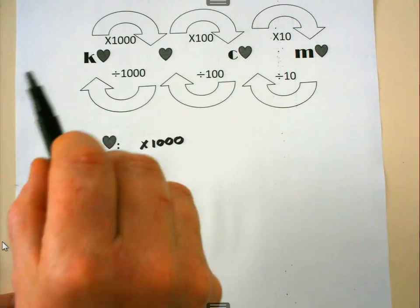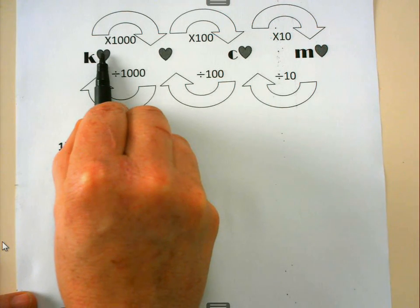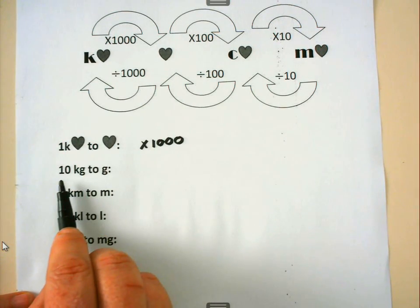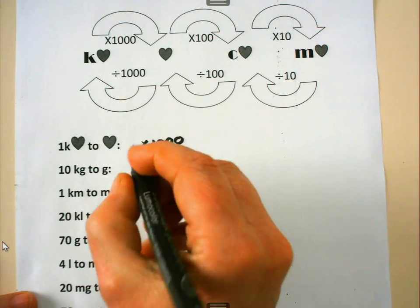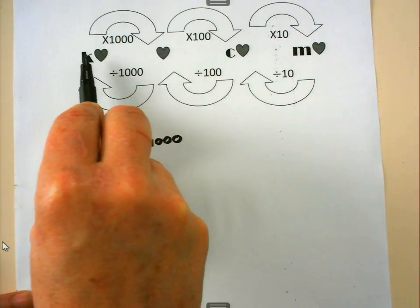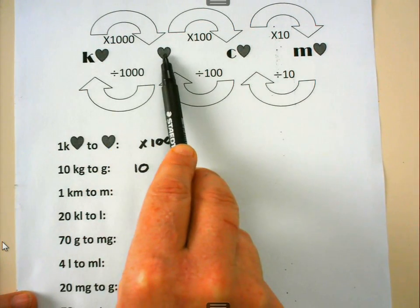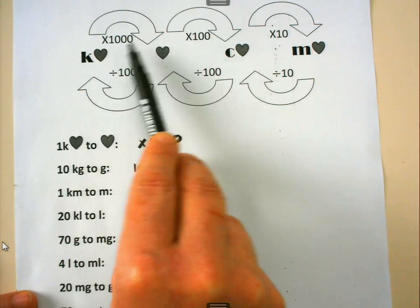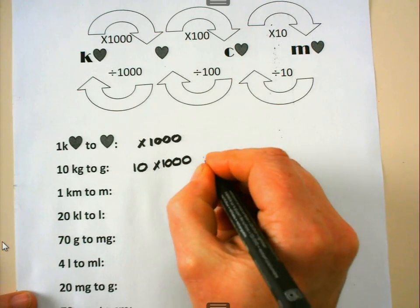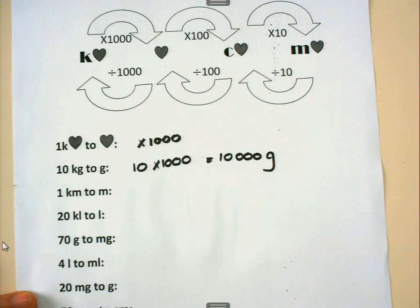Now let's go for real. In place of the heart, I can put a gram, a meter, or a liter depending on what I am measuring. First, converting 10 kilogram to gram: I move from kilogram to gram, multiplying by 1000, giving 10,000 gram. Next, 1 kilometer to meter: multiply by 1000, so 1 kilometer equals 1000 meters. Then, 20 kiloliter to liter: multiply by 1000, so 20 kiloliter equals 20,000 liters.